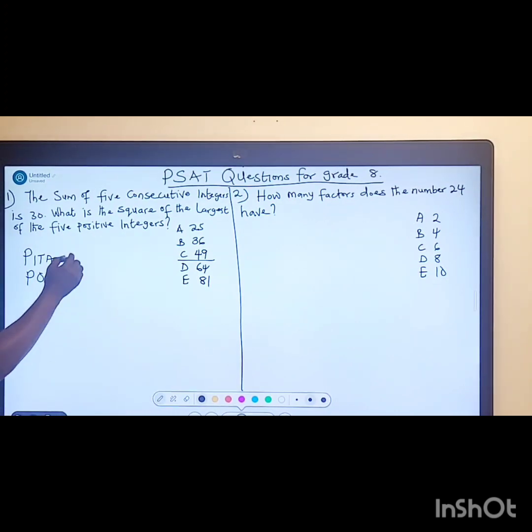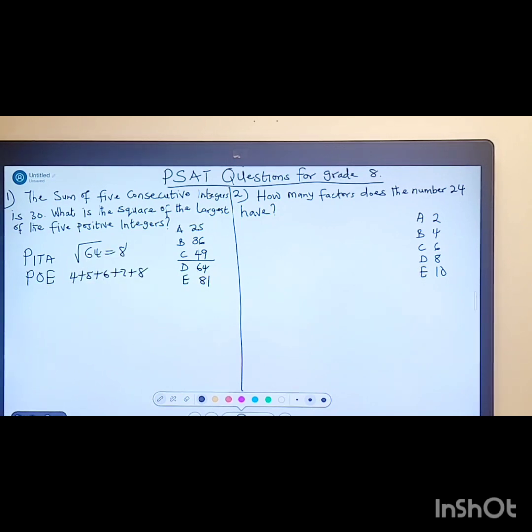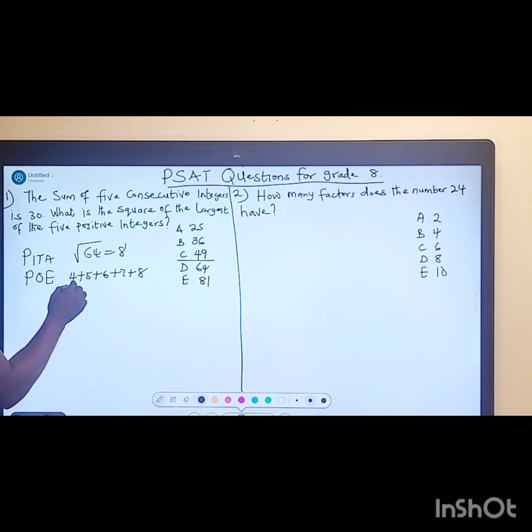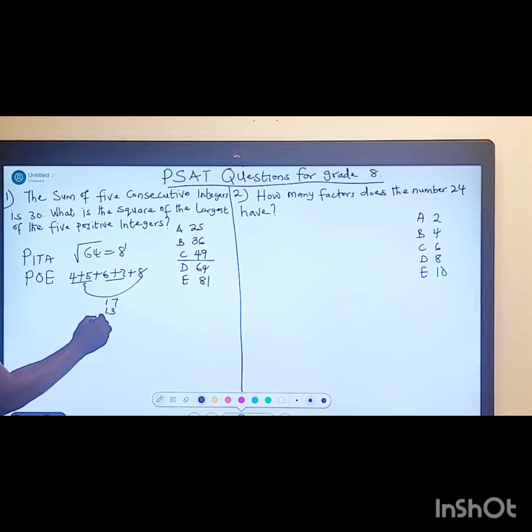For D, the square root of 64 is 8. The consecutive integers for that will be 4 + 5 + 6 + 7 + 8. This will give us 9, then 9 plus this gives us 17, and adding 13 gives us the total.